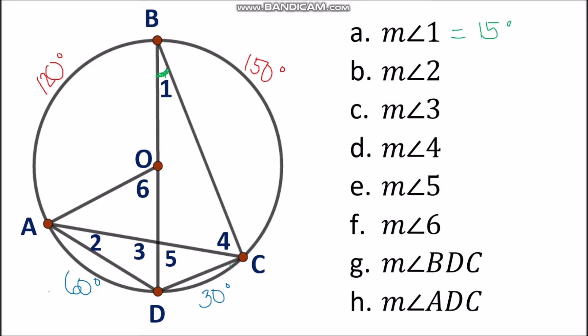Looking at the figure again, another angle also intercepts arc DC, and that is angle 2. Both angle 1 and angle 2 intercept the same arc, arc DC. By Theorem 99, inscribed angles that intercept the same arc have the same measurement, so angle 2 is also 15 degrees.